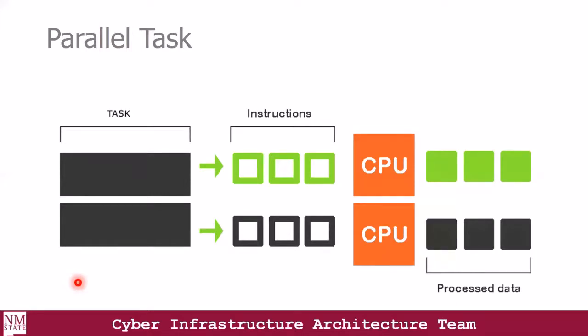With the parallel computing architecture, we've broken down our tasks into two, and then these tasks are being fed as instructions to multiple CPUs. These multiple CPUs process these instructions at the same time, and we get our results way faster because it is being processed simultaneously.